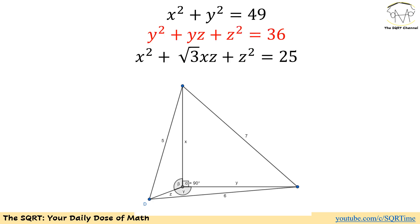For the second expression, y² + z² + yz = 36, we write 36 as 6², and construct a triangle with sides y and z. The angle between y and z is γ, and 6 is the side opposite γ.